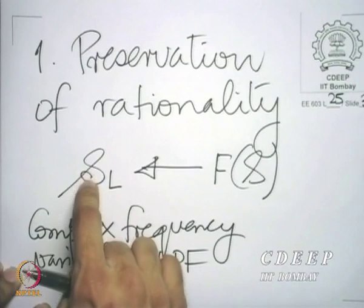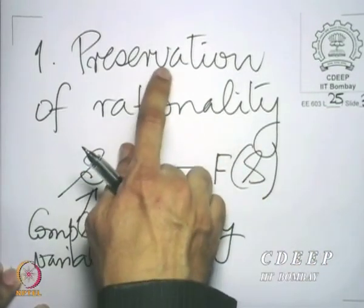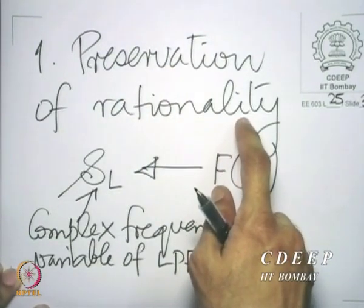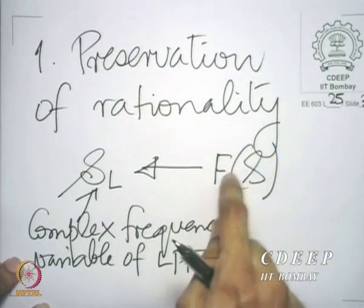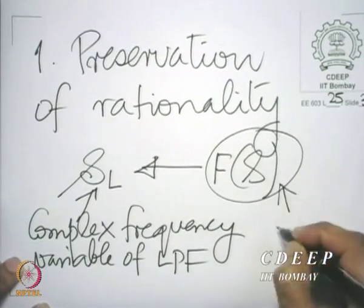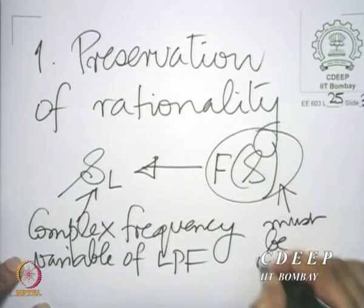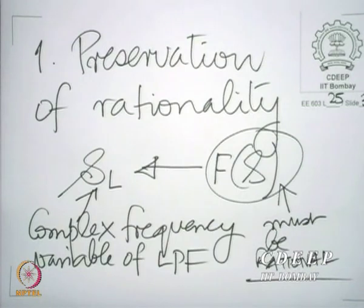And obviously, if you want rationality to be preserved — if you want the low pass filter, which is of course an analog rational function, to continue to be a rational function after the transformation — the only way is that F of S itself must be rational. So F must be rational. We do not need it to be bilinear, and it does not need to be first degree; it could be any degree. But it has to be rational.